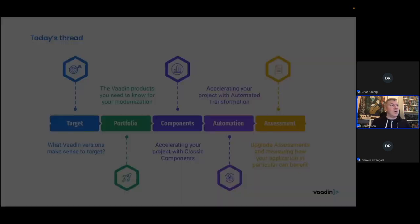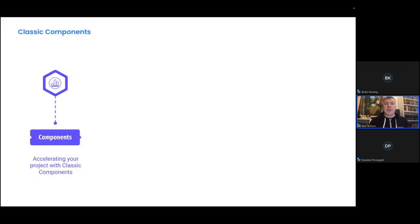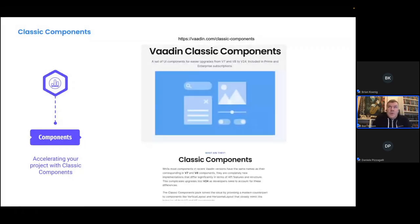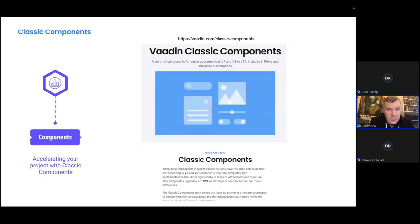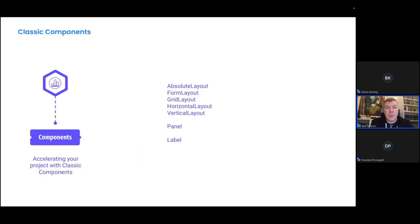Now let's focus on classic components. Classic components is an idea about one year old — we launched it in March of last year. The idea is to release a number of components on Vaadin Flow that have the same API and behavior as components inside Vaadin 8. There are over a thousand classes in Vaadin 8, but with classic components we're focusing on a small number: seven components that either don't exist in Vaadin Flow, or exist with a different behavior or API.